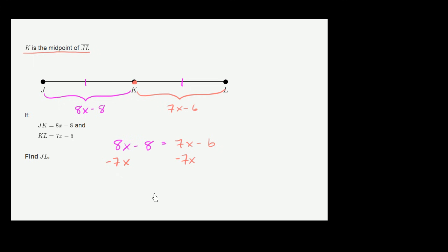And if we want to get all of the constant terms on one side, let's add 8 to both sides so that we don't have this negative 8 right over here. So let's add 8 to both sides, and let's see what we are left with.